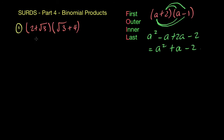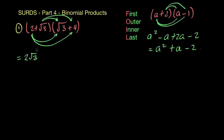So with our first example, we're going to multiply 2 onto the root 3, then 2 will multiply onto the 4, then we have root 3 multiplying onto root 3 — we've seen that kind of thing before — and then root 3 multiplies onto the 4 as well. Starting off, we have 2 times root 3, which gives you 2 root 3, then 2 times 4 gives you plus 8.